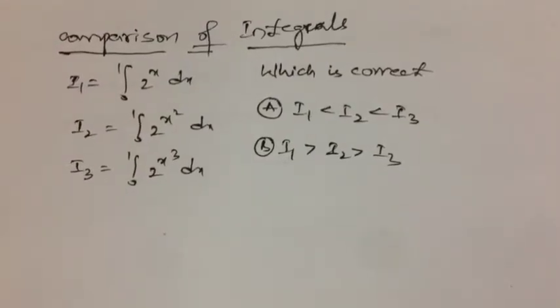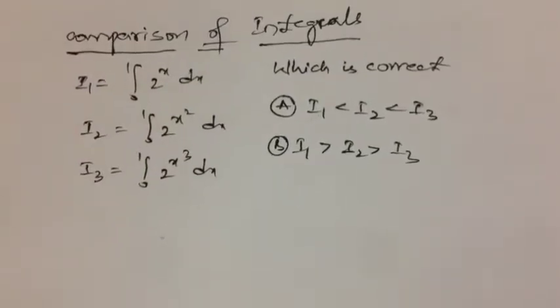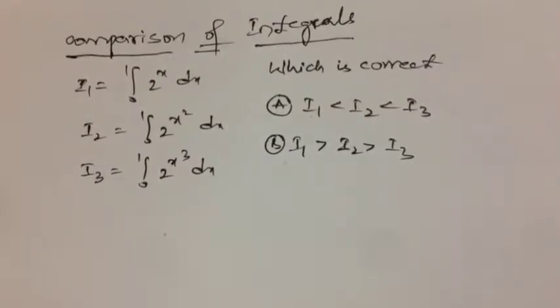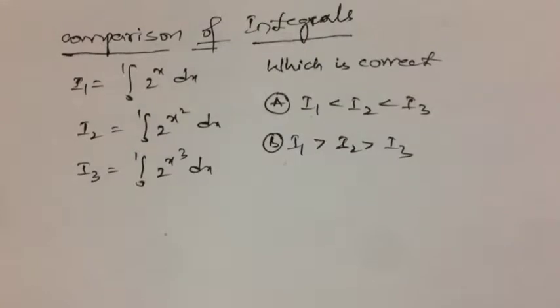Let's look at this problem. This problem is on comparison of integrals. So here we have three integrals. I₁ is equal to integral 0 to 1, 2^x dx.